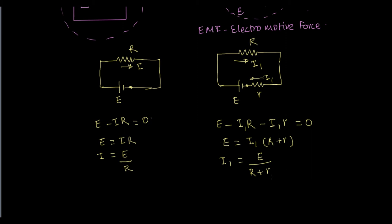Since this r is a positive quantity, that means when I compare these, the denominator of this is greater than this, so this I1 is less than I. So I1 is less than I, that is the first thing. Why? Because this inherent resistance comes into play.